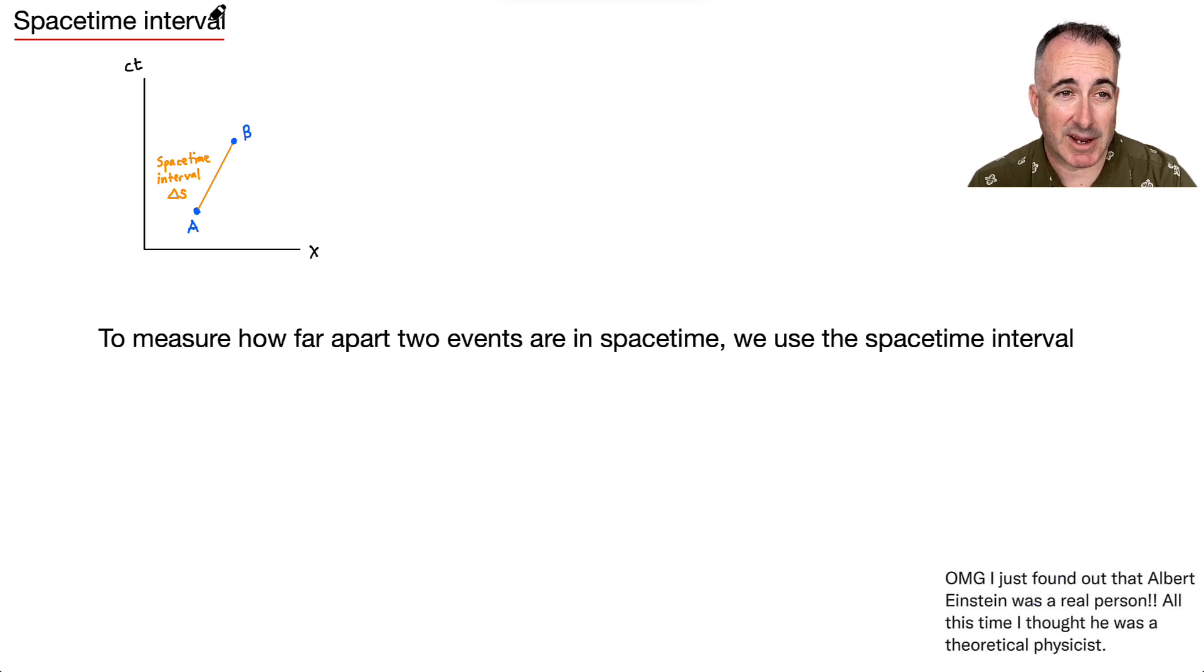Okay, so let's go ahead and talk about the spacetime interval itself. I put this in, oh my god, I just found out that Albert Einstein's a real person. All this time I just thought he was a theoretical physicist. So if we look at this right here, if we want to measure how far apart two events are, so event A and event B, if I want to measure how far apart they are in spacetime, then we use this thing that we call the spacetime interval, this delta S here.